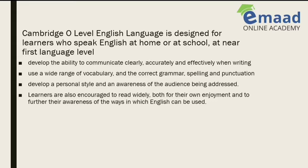O Levels English language is designed for learners who speak English at home or at school at near first-language level. The purpose of this course is to develop the ability to communicate clearly, accurately, and effectively when writing — to use a wide range of vocabulary and correct grammar, spelling, and punctuation. The examiner will look for and expect these things in your paper, including a wide range of vocabulary in your writing and reading sections.